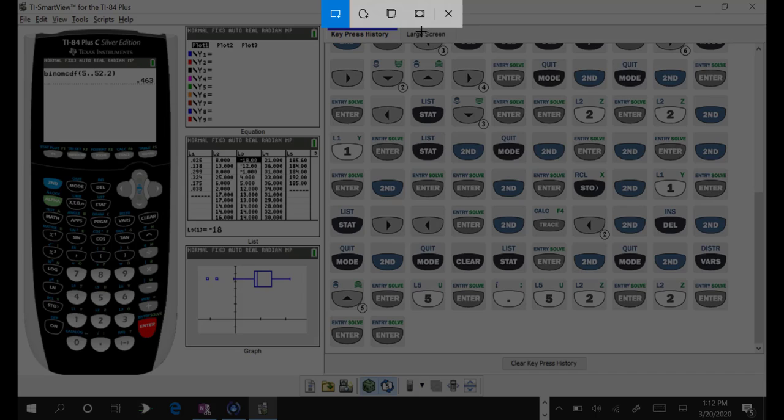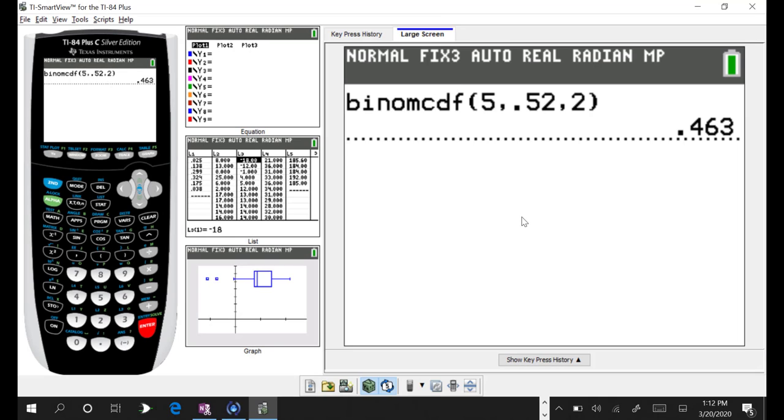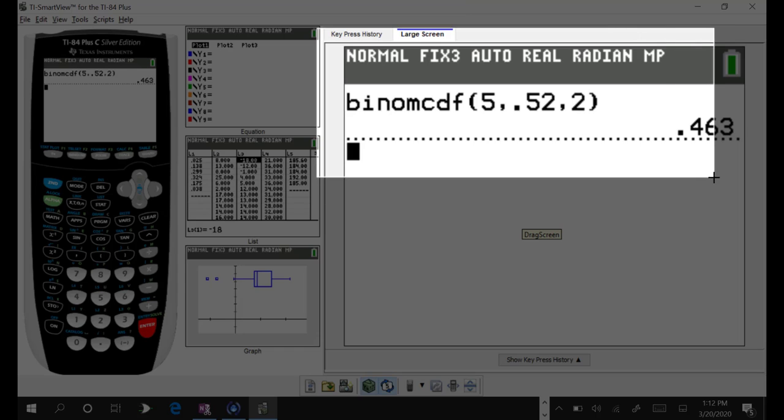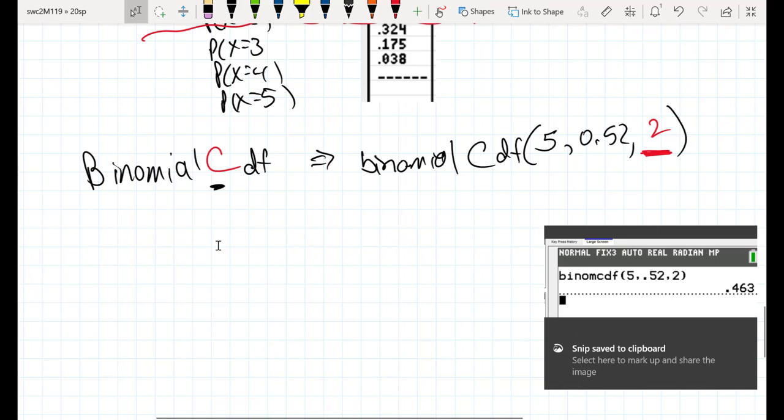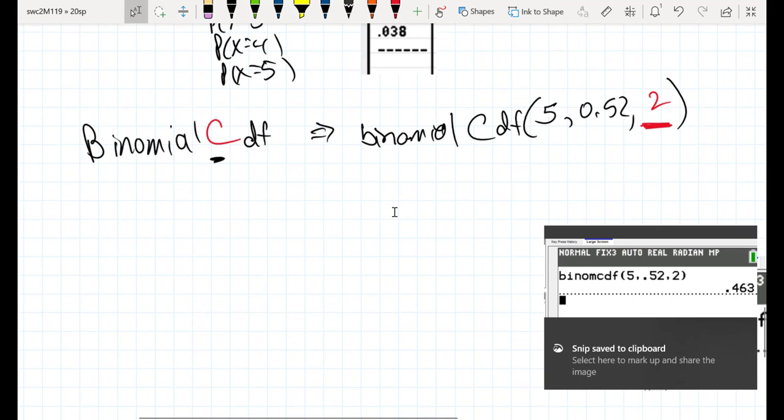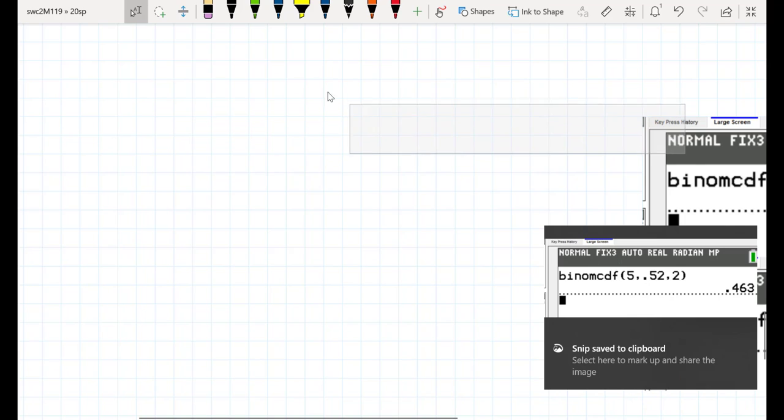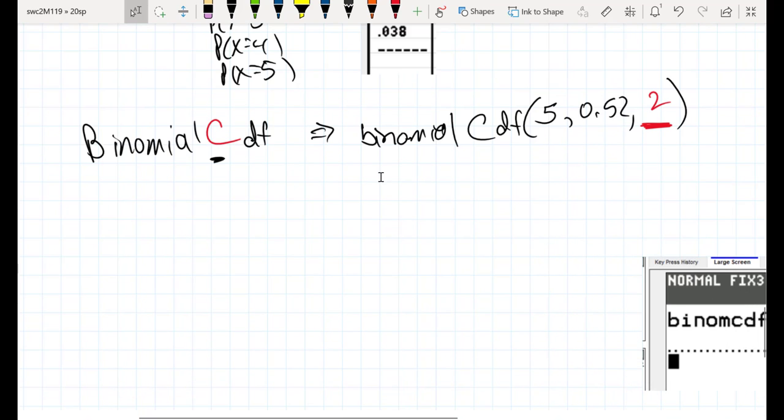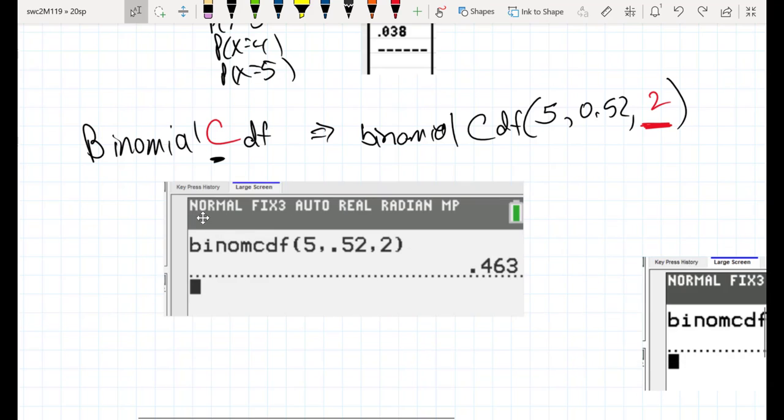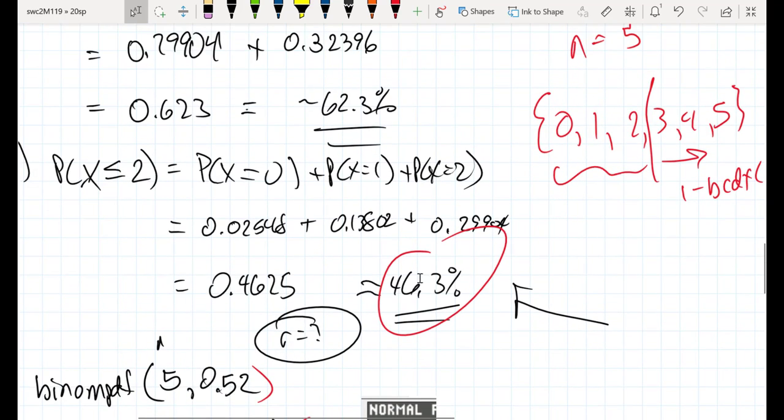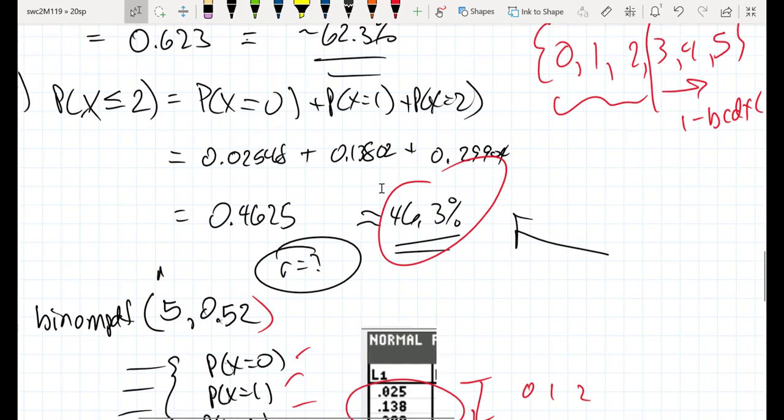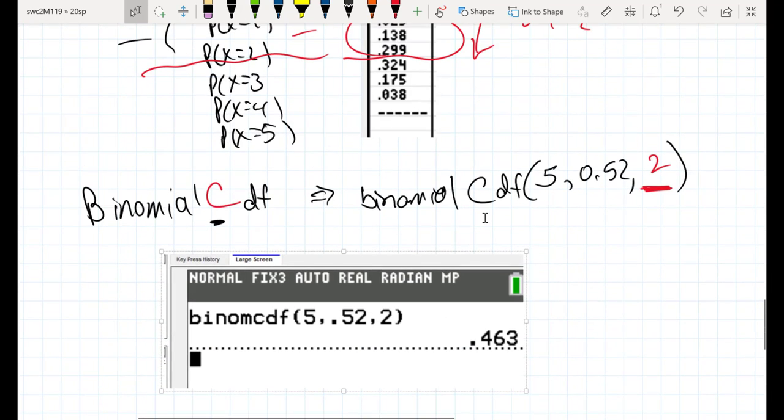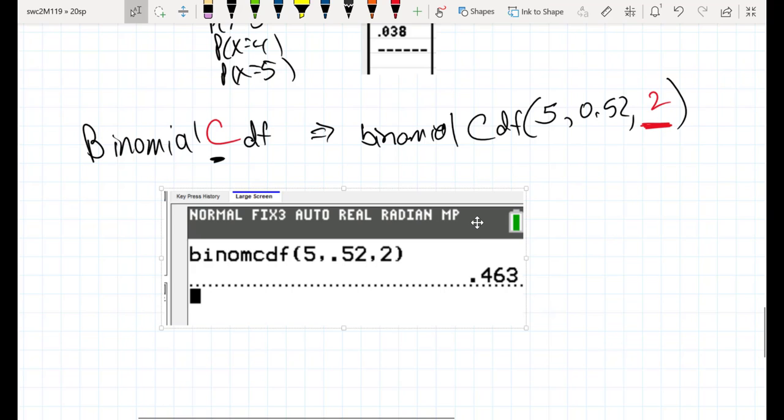...I get my .463 when I use binomial CDF. And if I go back, let me pull that in here, so I can save this, but that .463 is what we wanted. So there are two ways of getting that .463, where we could do the individual sums of the probabilities, or we could just have binomial CDF create those sums for us.